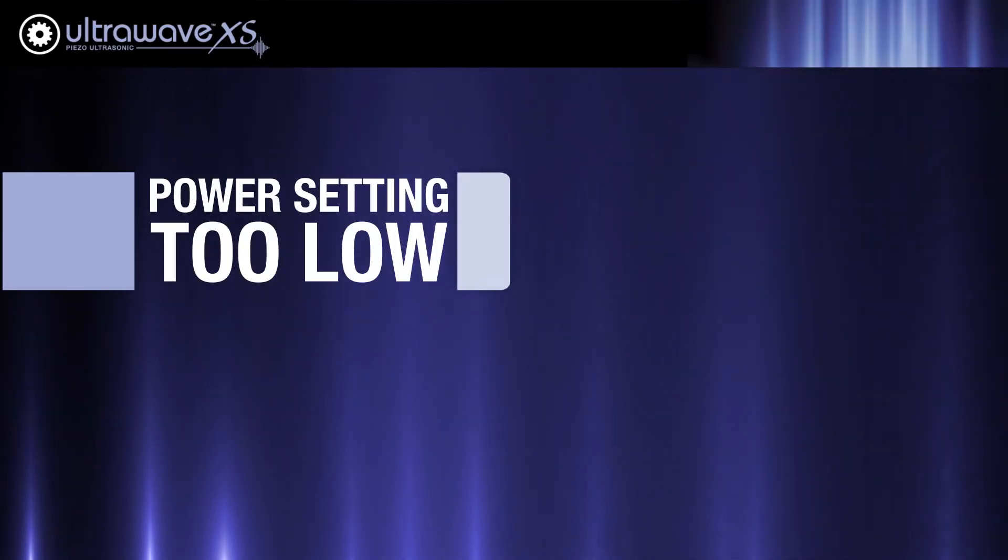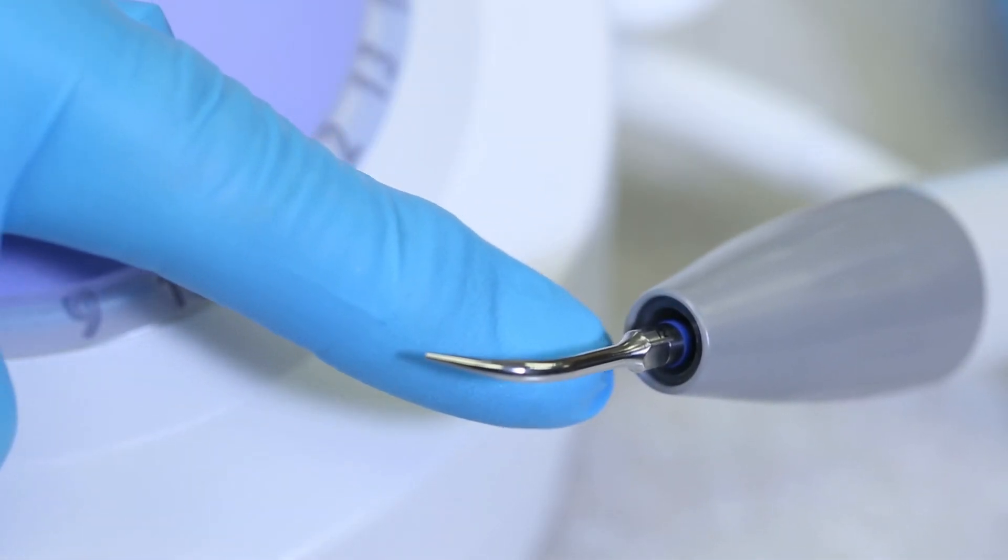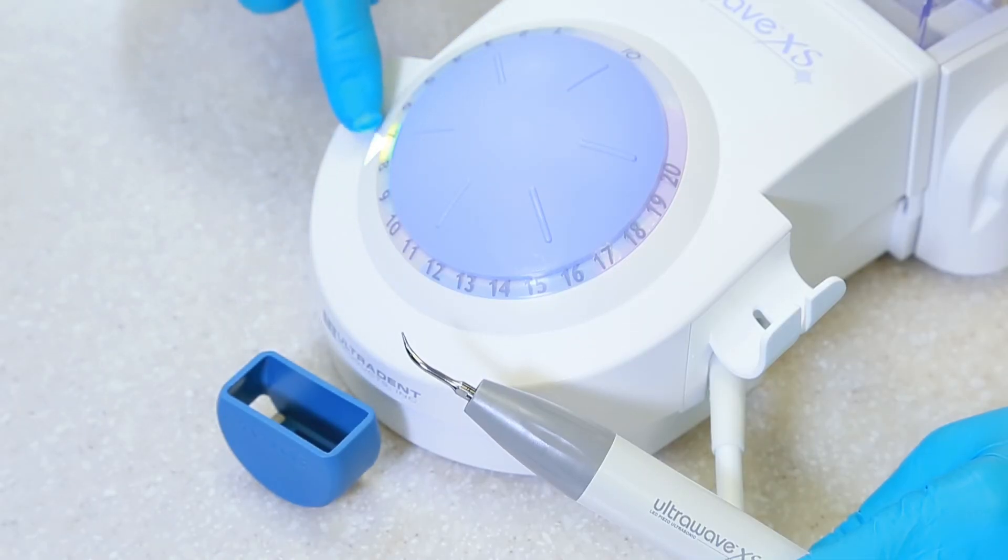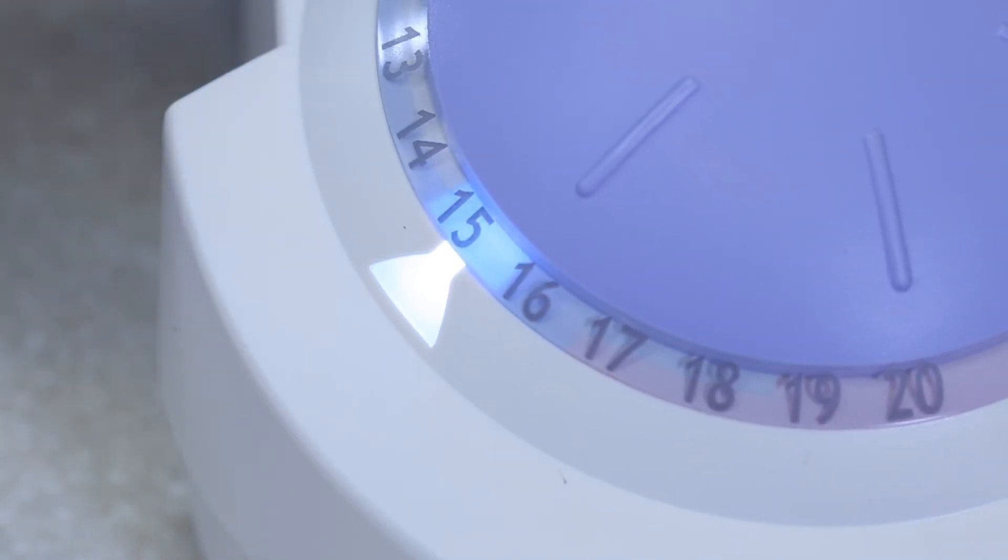The Ultrawave XS uses a color coding system to ensure that the proper power is being used with the proper tip. Make sure that the color of the tip and the colors shown on the dial match.